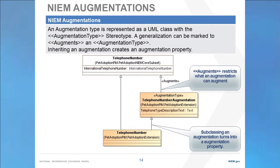NIEM also defines a concept of augmentations. Augmentations allow new properties to be defined for a class across multiple namespaces and then arbitrarily combined. In this case, we see that telephone number in pet adoption uses the core definition of telephone number, as well as an augmentation that includes the telephone type. An augmentation is like any other class; however, it has the augmentation type stereotype. A class may then inherit any number of augmentation types, and the properties will be combined.